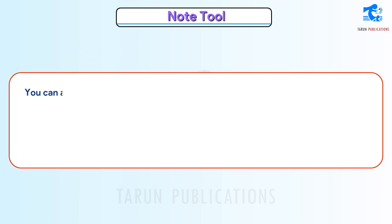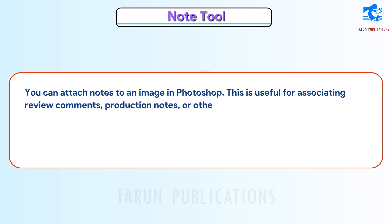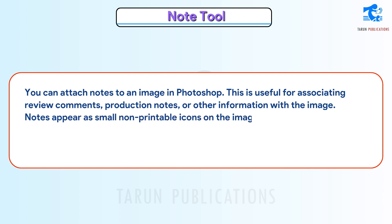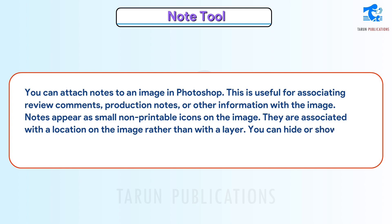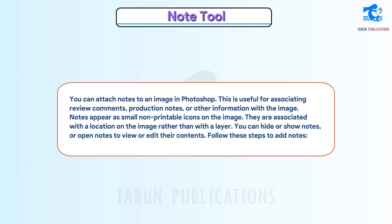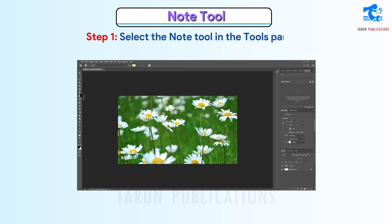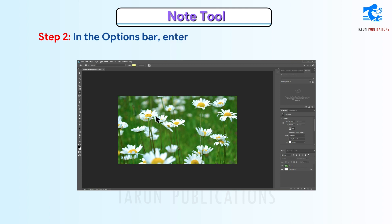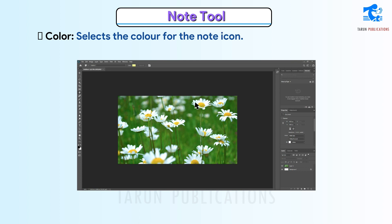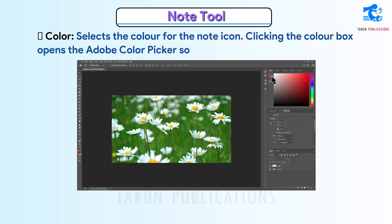Note Tool. You can attach notes to an image in Photoshop. This is useful for associating review comments, production notes, or other information with the image. Notes appear as small non-printable icons on the image. They are associated with a location on the image rather than with a layer. You can hide or show notes, or open notes to view or edit their contents. Follow these steps to add notes. Step 1: Select the Note Tool in the Tools panel. Step 2: In the Options bar, enter or specify the following as needed — Author specifies the note author's name; Color selects the color for the note icon. Clicking the color box opens the Adobe Color Picker so you can select a color. Step 3: Click where you want to place the note.